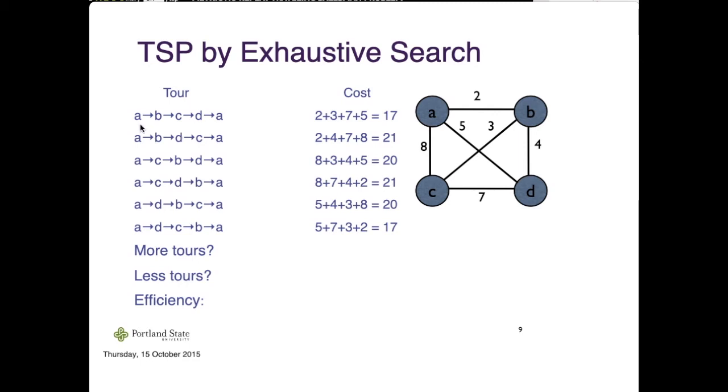For each possible permutation of vertices, we can compute the cost. For example, the cost for the tour A, B, C, D, A is equivalent to 17 because A to B is 2, B to C is 3, C to D is 7, and D to A is 5. For the exhaustive search, we just need to assess each possible candidate solution, compute the cost, and output the one with minimum total distance.